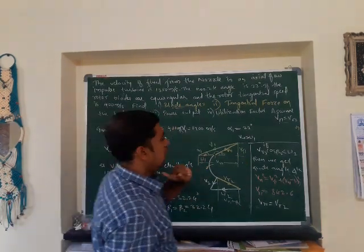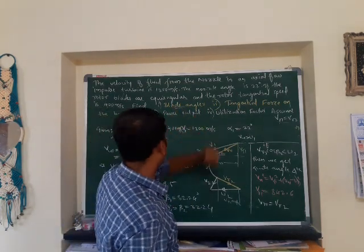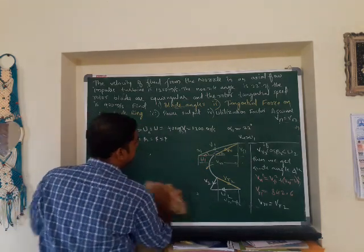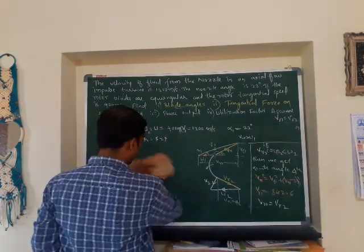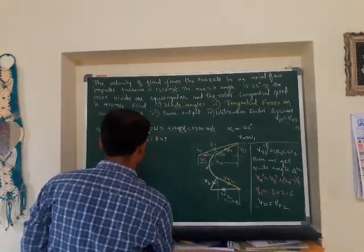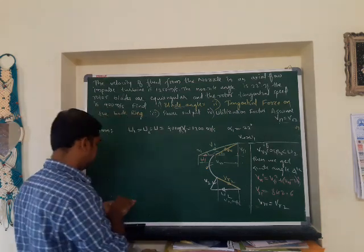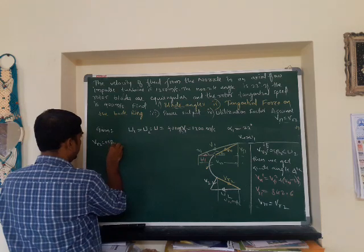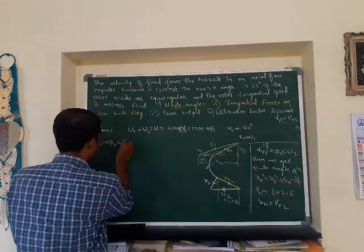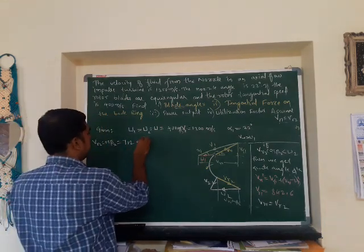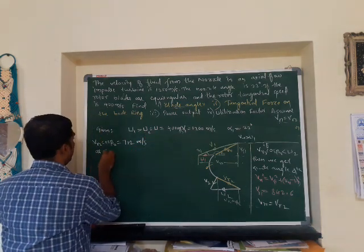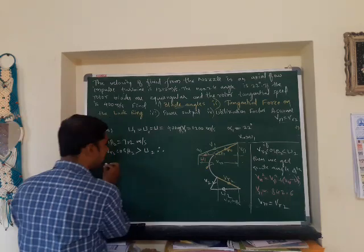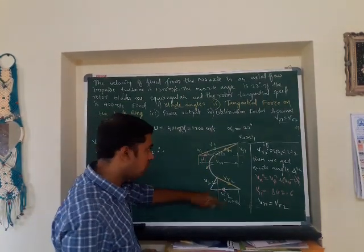We have calculated the blade angles beta1 and beta2. Next we calculate the tangential force, power output, and utilization factor. Since PR1 equals PR2, we calculate VR2 cos(beta2) and get approximately 712 meter per second. Since VR2 cos(beta2) is greater than U2, the outlet velocity triangle we originally drew is not correct and must be corrected. Therefore, the outlet velocity triangle should be an obtuse-angle triangle.